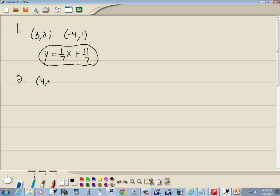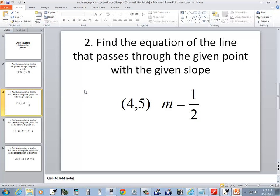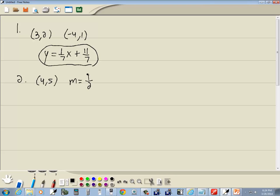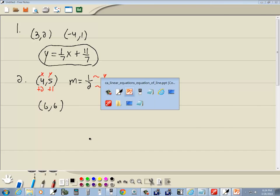We've got (4,5) and m equals 1/2. Same instructions, find equation of a line that passes through the given point with the given slope. Remember, slope is the change in y over the change in x. If this is not already in fraction form, you want to put it in fraction form. Our change in y is a positive 1. So I'll come over here, this is our x and this is our y. We're going to put a plus 1 underneath the 5. Now the change in x is a plus 2. So I'm going to put a plus 2 underneath the x. Now this gives us a second point. 4 plus 2 is 6, and 5 plus 1 gives us 6. So now we have two points.